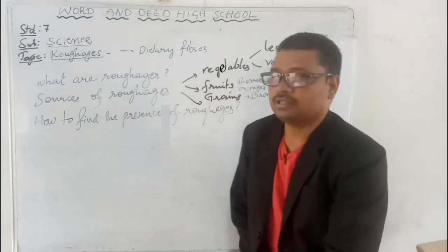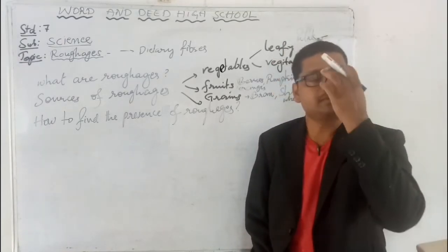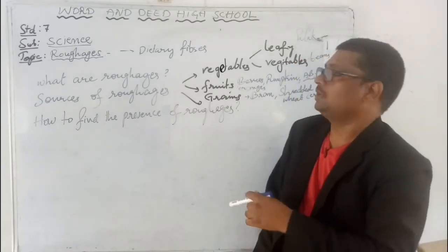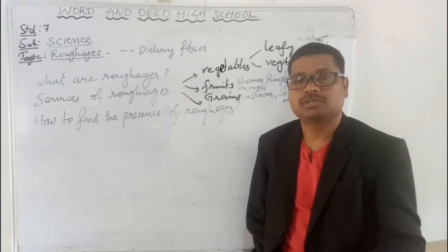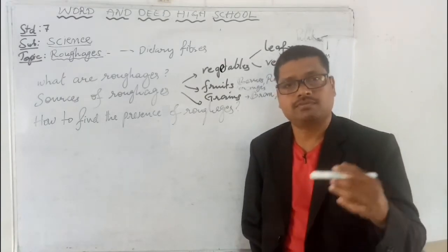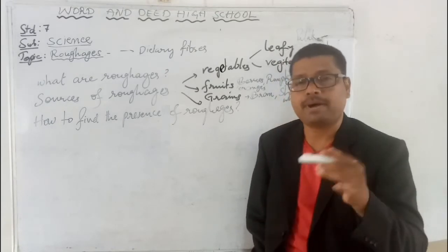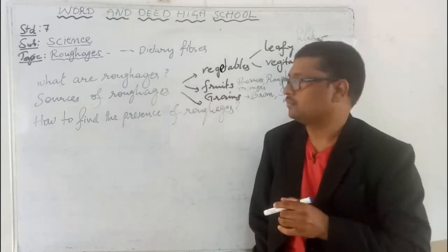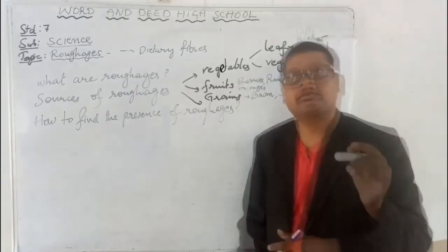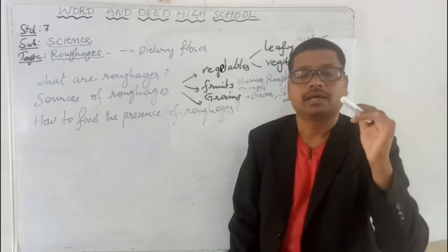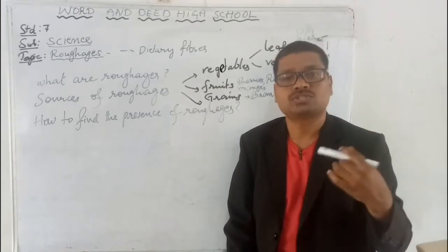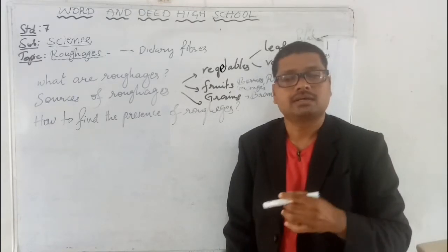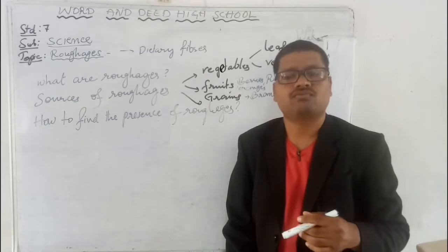And what are the vegetable sources of roughage? In vegetables, roughage is found in leafy vegetables and raw vegetables. For leafy vegetables, palak is a main rich fiber food in our daily diet. Other vegetables rich in roughage include ribbed gourd, plain potato, sweet potato, and lady's finger.